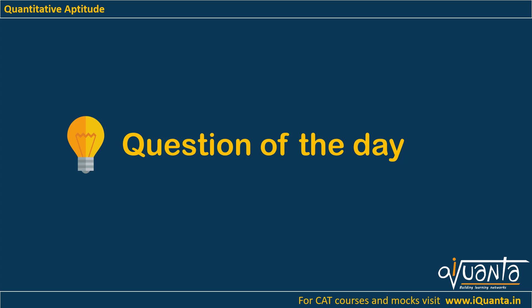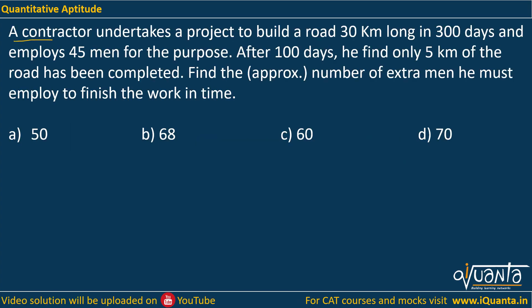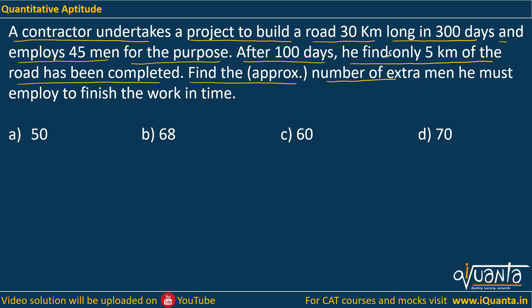Hello everyone. Today's question is based upon time and work. We'll also get to see an interesting relation between man-days and work. The question is: a contractor undertakes a project to build a road 30 kilometers long in 300 days, and employs 45 men for the purpose. After 100 days, he finds only 5 kilometers of the road has been completed. Find the approximate number of extra men he must employ to finish the work in time.